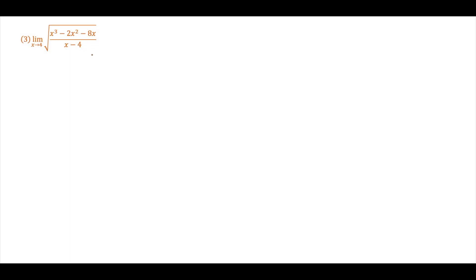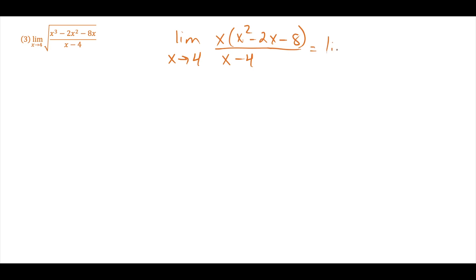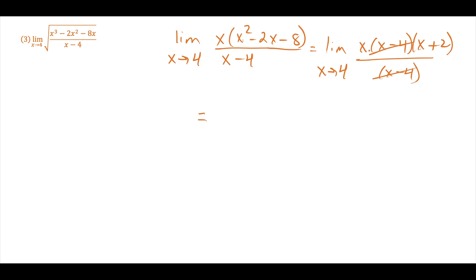For the third example, we're dealing with the square root function. A quick mental check: plugging in 4 gives 4 − 4 = 0 in the denominator, which is undefined, so we have more work to do. The trick is to target the inside function: (x³ − 2x² − 8x)/(x − 4). We factor out x to get x·(x² − 2x − 8), then factor the quadratic as (x − 4)(x + 2). The matching (x − 4) factors cancel, and plugging in 4 gives 4 times (4 + 2) = 4 × 6 = 24.